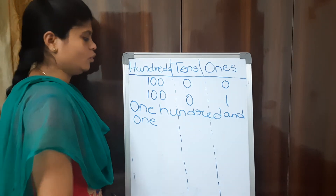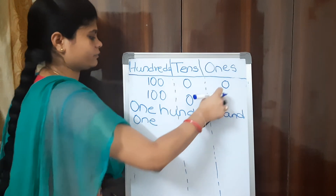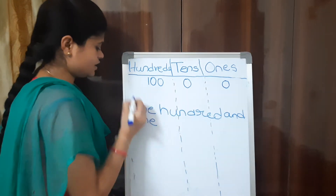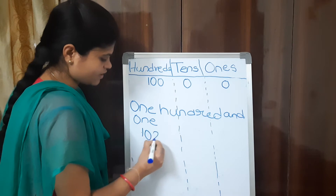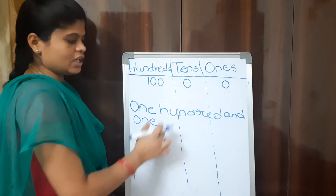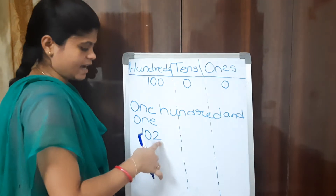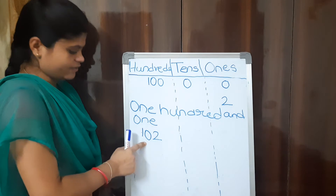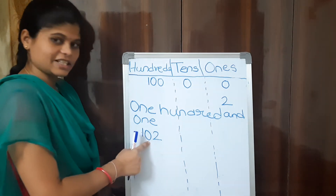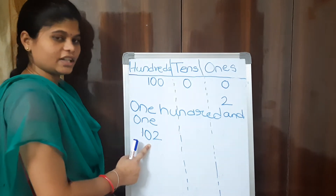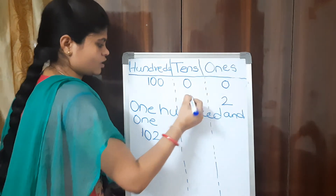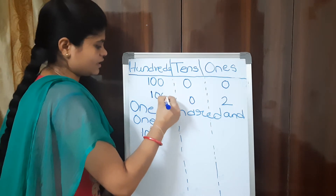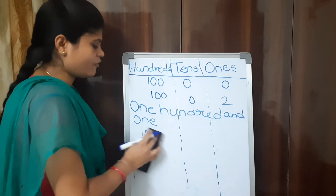How do we write 102 in the same way? In 102, we have 2 ones, so we write 2. We have 0 tens, so we write 0 in tens place. We have 1 hundred. This is how we write 102 in place values. What is the number name of 102?